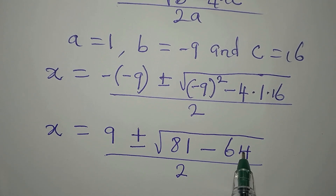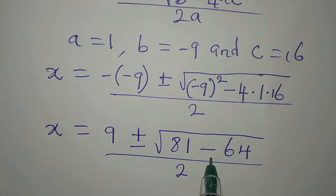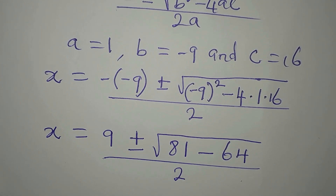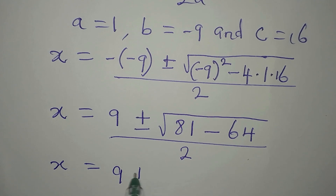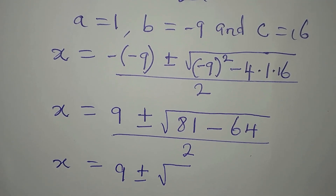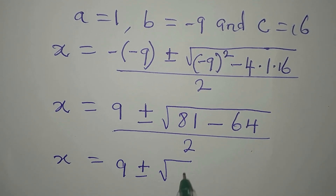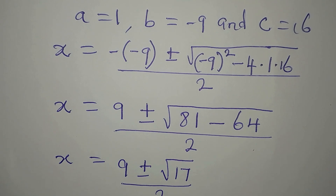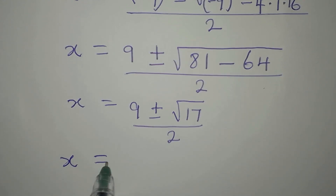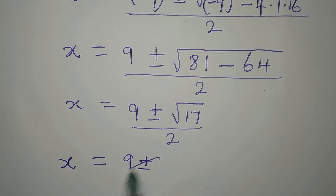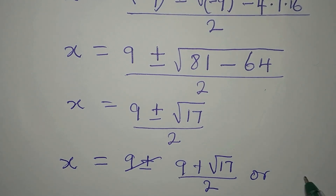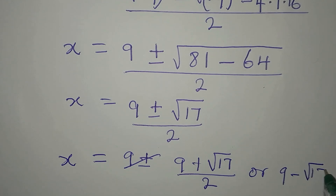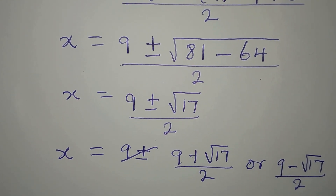Now 81 and 64 are both perfect squares, but we simplify before taking the square root. So x equals 9 plus or minus square root of (81 minus 64), which is square root of 17, divided by 2. So we have two solutions: x equals (9 plus root 17) over 2, or x equals (9 minus root 17) over 2.